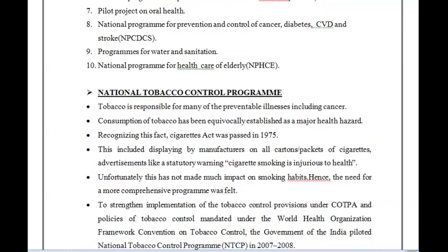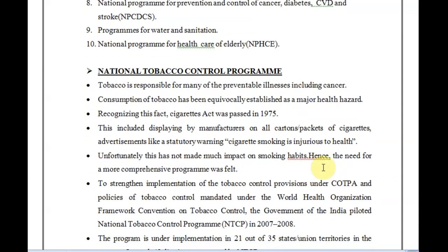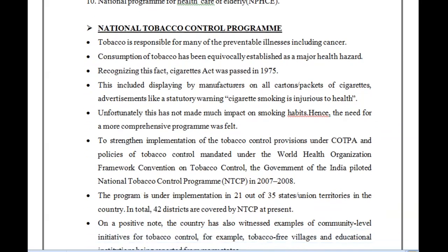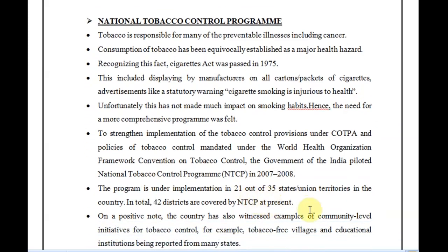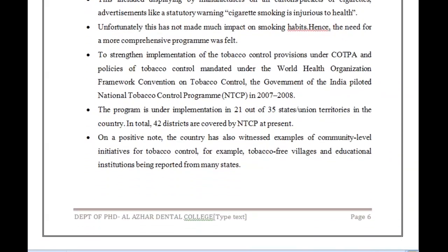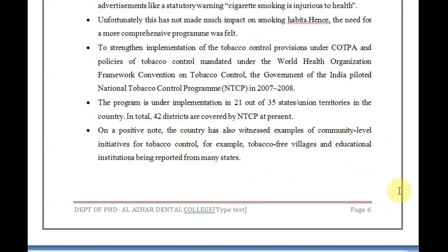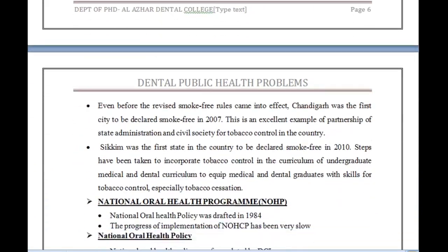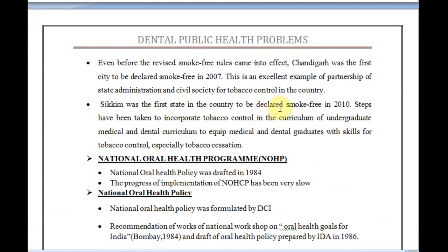Tobacco is responsible mainly for oral cancer. The Cigarettes Act was passed in 1975, and in 2003 FCTC was signed. The Government of India then piloted the National Tobacco Control Program in 2007-08, currently under implementation in 21 out of 35 states and union territories. The country has witnessed community-level initiatives for tobacco control. Sikkim was the first state declared smoke-free in 2010, and Chandigarh was the first city declared smoke-free in 2007.